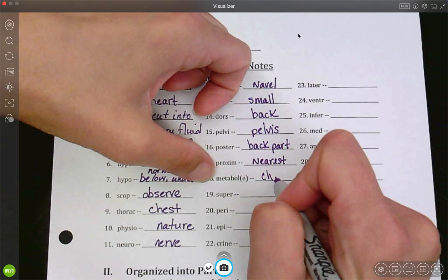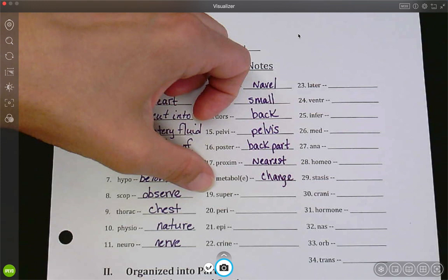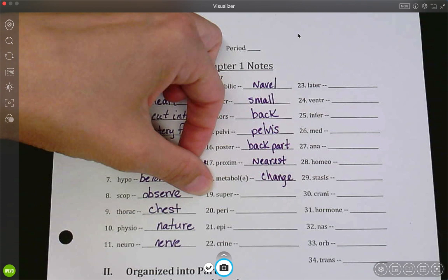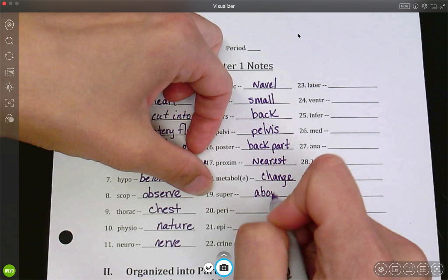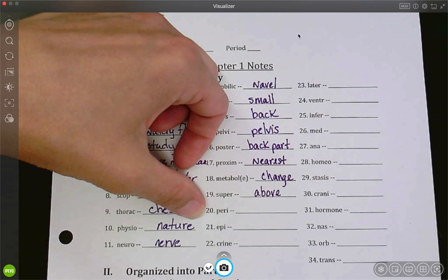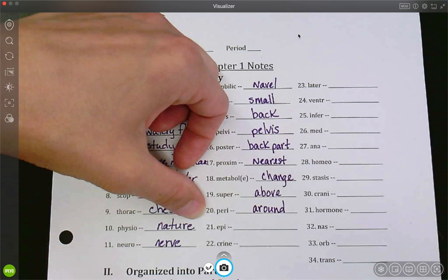Metabol. Most of us have heard this. Metabolism. What does your metabolism do? It changes that food into energy. Super. Like a superior. A boss. They are above you in rank. Peri. We're going to use this one a lot. Is around.